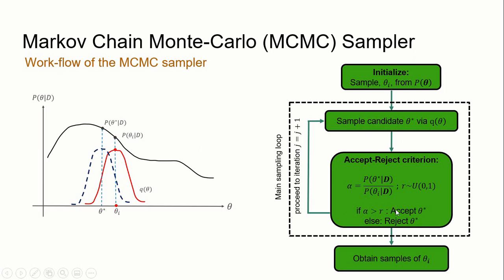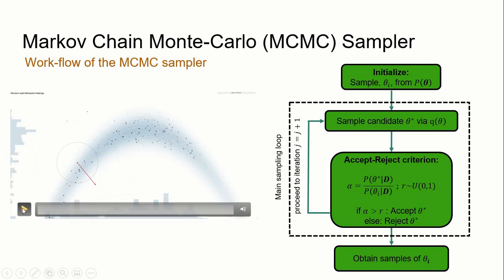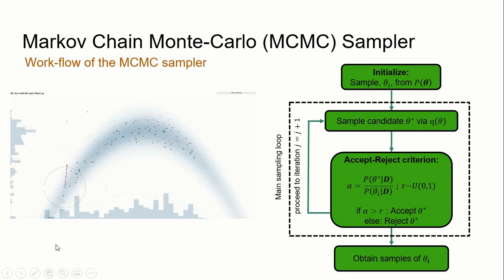In other words, every iteration generates one sample. If you wish to obtain n samples from the posterior, this loop will repeat itself n times. As an illustration of how the MCMC sampler works, a short video clip is provided to show how it works as a whole.